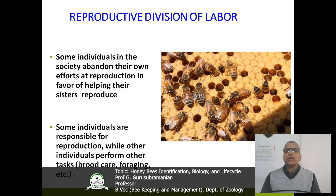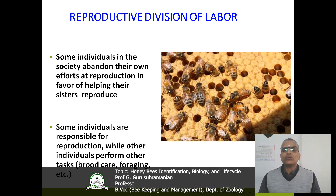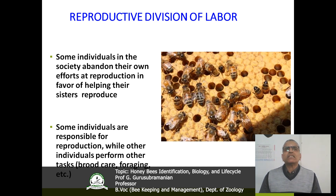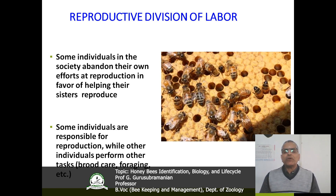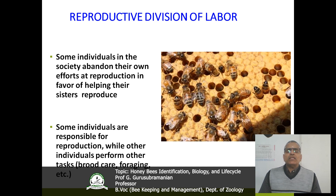Number two is reproductive division of labor. In that beehive, some bee individuals in the society abandon their own efforts at reproduction in favor of helping their sisters to reproduce. Some individuals are responsible for reproduction while other individuals perform other tasks like brood care, foraging, bee maintenance, colony maintenance, etc.